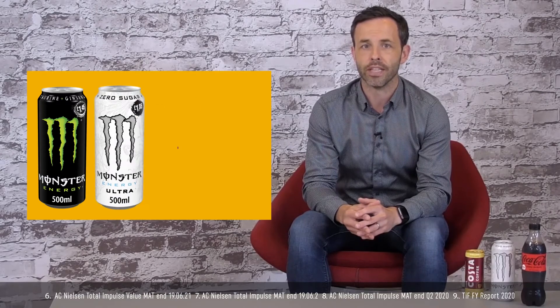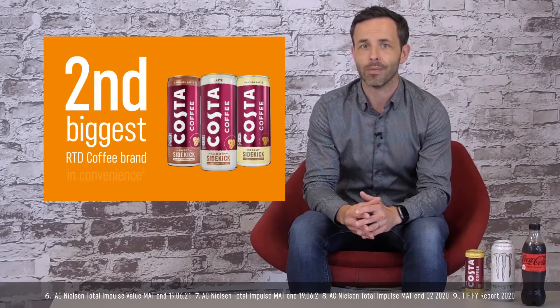Monster is delivering the most value growth for the convenience channel in energy. Fanta remains number one in flavored carbonates, and Costa Coffee ready-to-drink is the second biggest cold coffee brand in convenience. Demand for low and zero sugar options has increased in recent years.